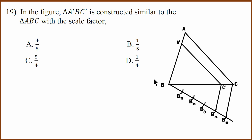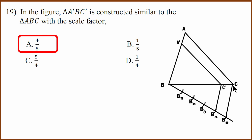Nineteenth question is about scale factor. They have given triangle ABC as the bigger triangle and a smaller triangle. BC of the smaller triangle measures 4 units and BC of the bigger triangle measures 5 units, so the ratio is 4 divided by 5. If they ask in what ratio C-dash divides BC, the scale factor ratio is 4 to 1.